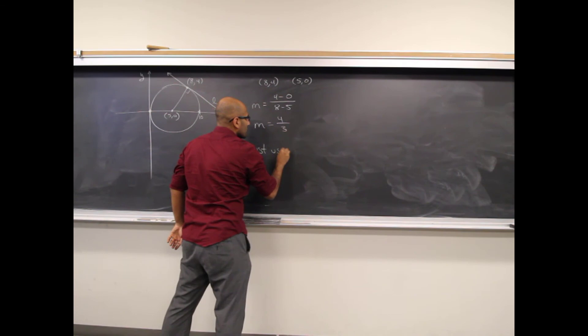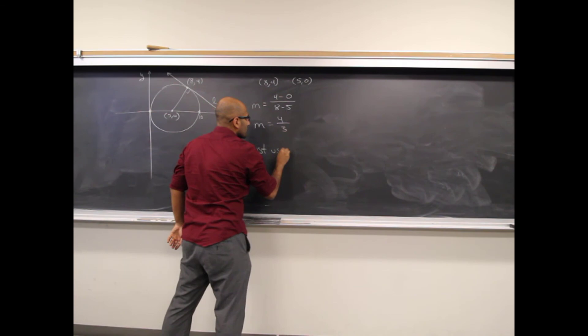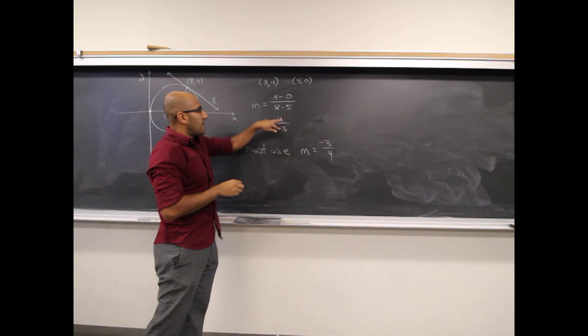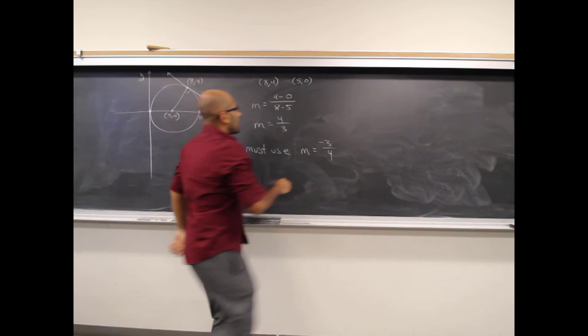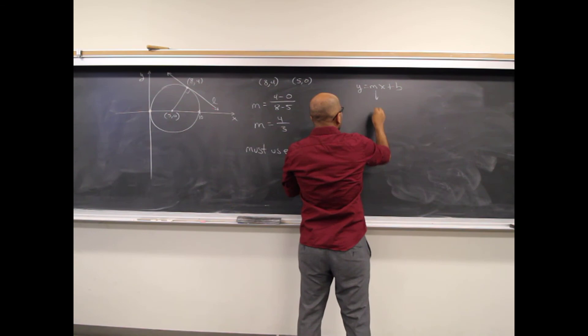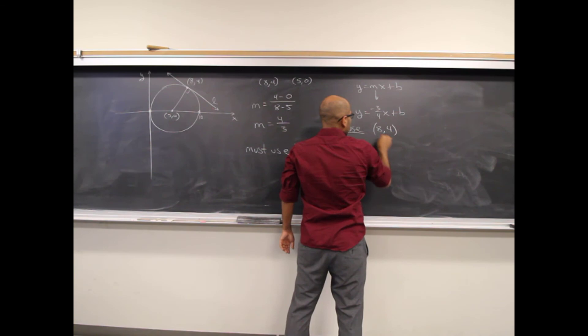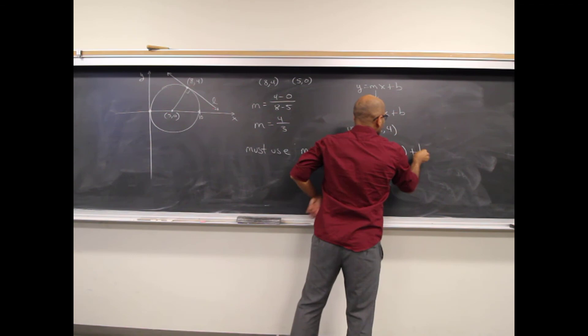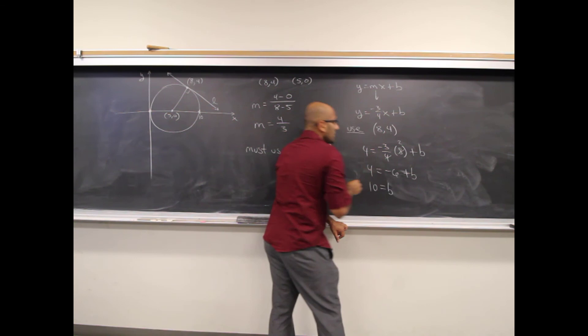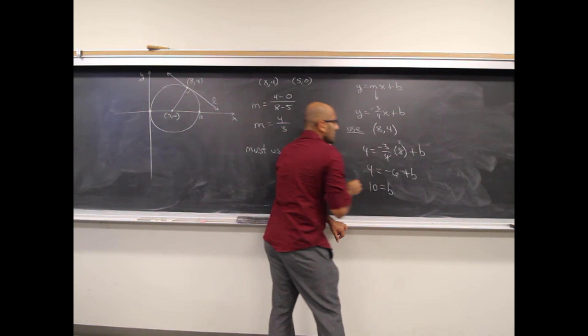For the perpendicular line, I must use m equals negative 3 over 4 — opposite sign and reciprocal. Using point (8, 4): y equals negative 3/4 x plus b, so 4 equals negative 3/4 times 8 plus b, giving 4 equals negative 6 plus b, so b equals 10. The equation is y equals negative 3/4 x plus 10.